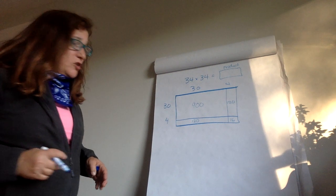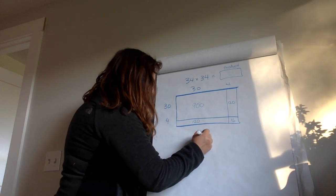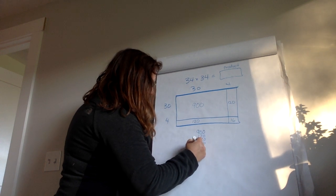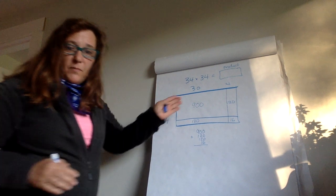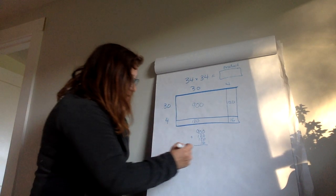Now I have all these partial products. I have 900 plus 120 plus 120 plus 16. Making sure I line up the ones with the ones and the tens with the tens. Then I add them together.